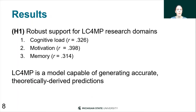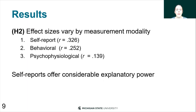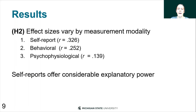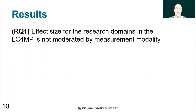For hypothesis one, we find robust support for the LC4MP research domains — all research domain effect sizes are significantly different from zero. Specifically, we find moderate effect sizes for each research domain, showing that LC4MP is a model capable of generating accurate, theoretically derived predictions. For hypothesis two, effect size did vary by measurement modality, but not in the order we predicted. We predicted behavioral would have the largest effect, but we actually found that self-report had the largest effect sizes, followed by behavioral, and as predicted, psychophysiology had the smallest. This suggests self-reports offer considerable explanatory power and are useful in detecting LC4MP effects. The interaction effects within our model were not statistically significant, indicating that effect sizes for research domains are not moderated by measurement modality.